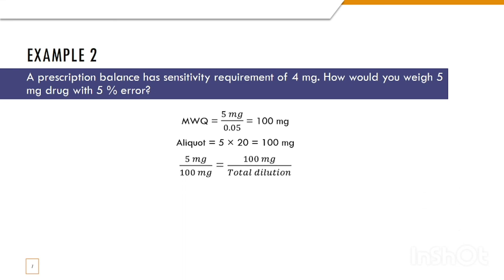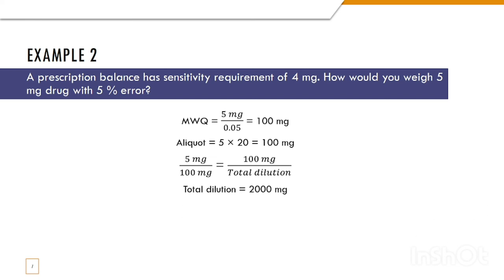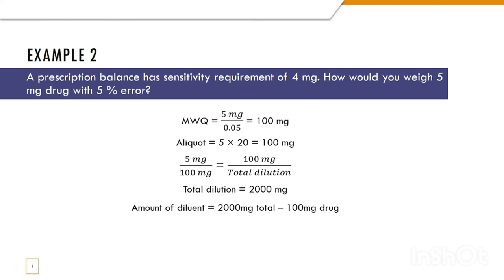For the total dilution: 5 mg divided by 100 mg equals 100 mg divided by total dilution. By rearranging, total dilution equals 2000 mg. The amount of diluent is calculated by subtracting the aliquot amount from the total dilution: 2000 mg minus 100 mg gives a diluent amount of 1900 mg.